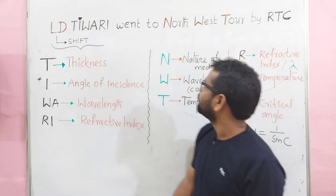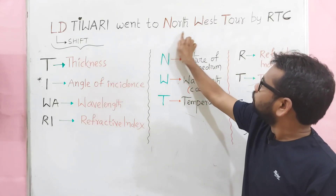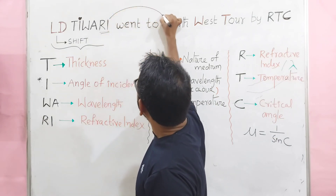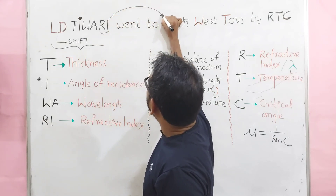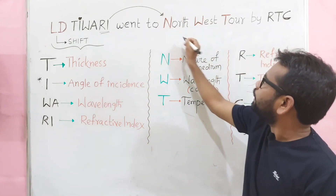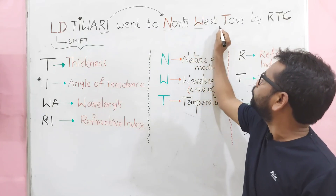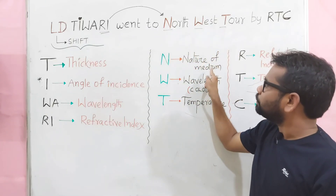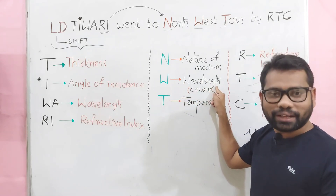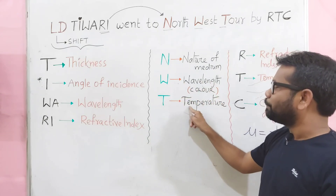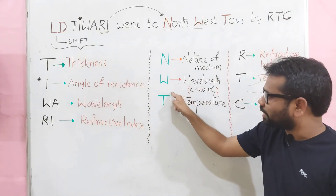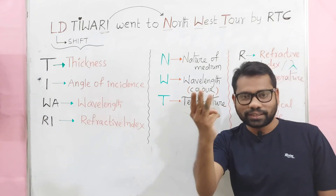So here we learn 2 answers. The third one: 'North West Tour.' Refractive index depends on these 3 factors. In 'North West Tour' I highlighted 3 letters — N, W, T. N stands for nature of the medium, W stands for wavelength or color, and T stands for temperature. So refractive index depends on these 3 factors. This is the third answer.